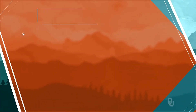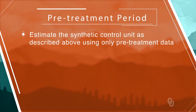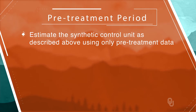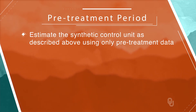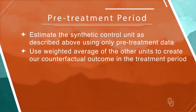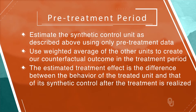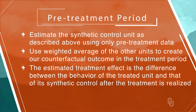In the pre-treatment period, we estimate the synthetic control unit as described above using only pre-treatment data. Then, since the control is just a weighted average of the other units, we can use those weights to create our counterfactual outcome in the treatment period. The estimated treatment effect is the difference between the behavior of the treated unit and that of its synthetic control after the treatment is realized.